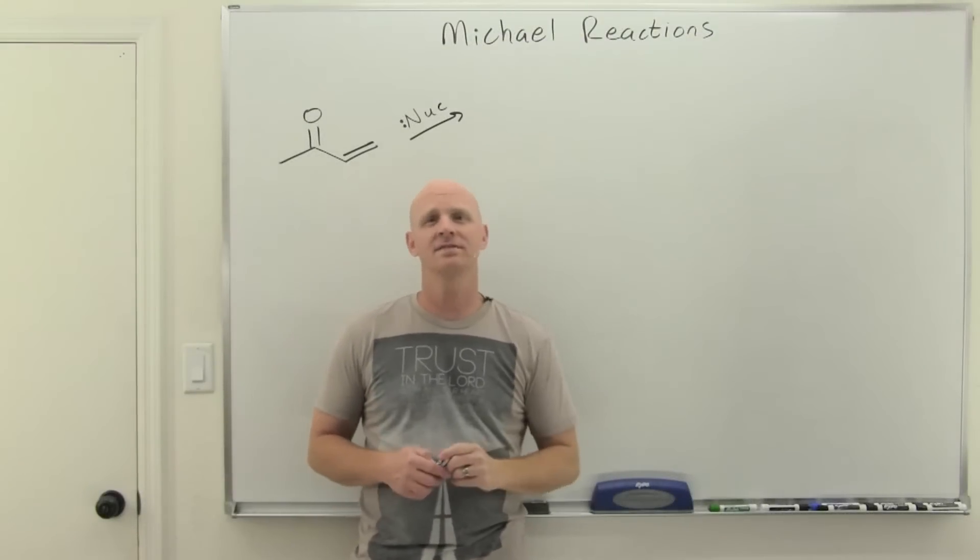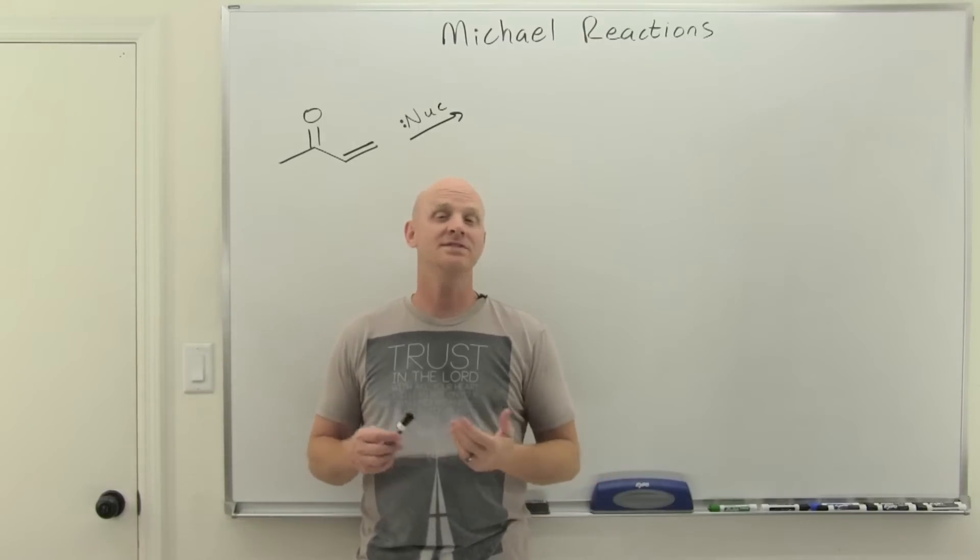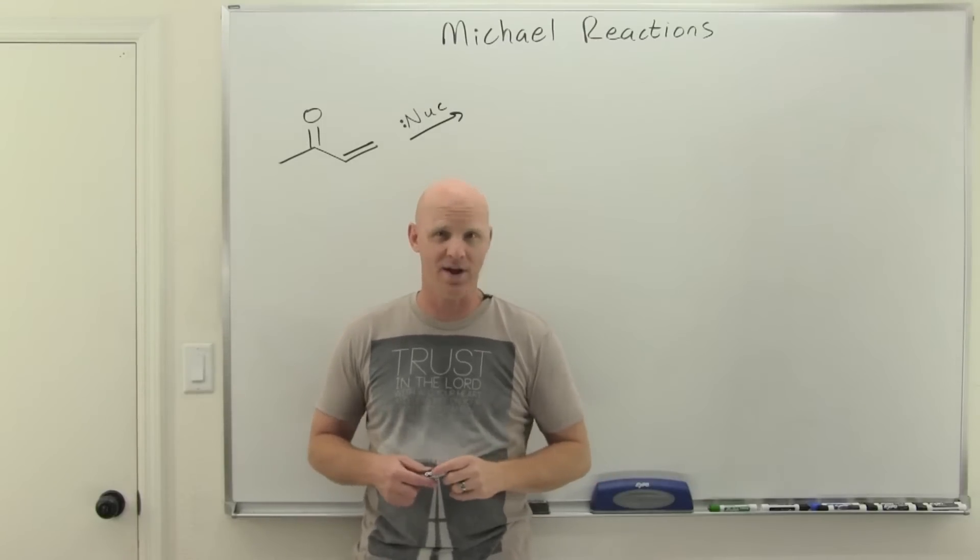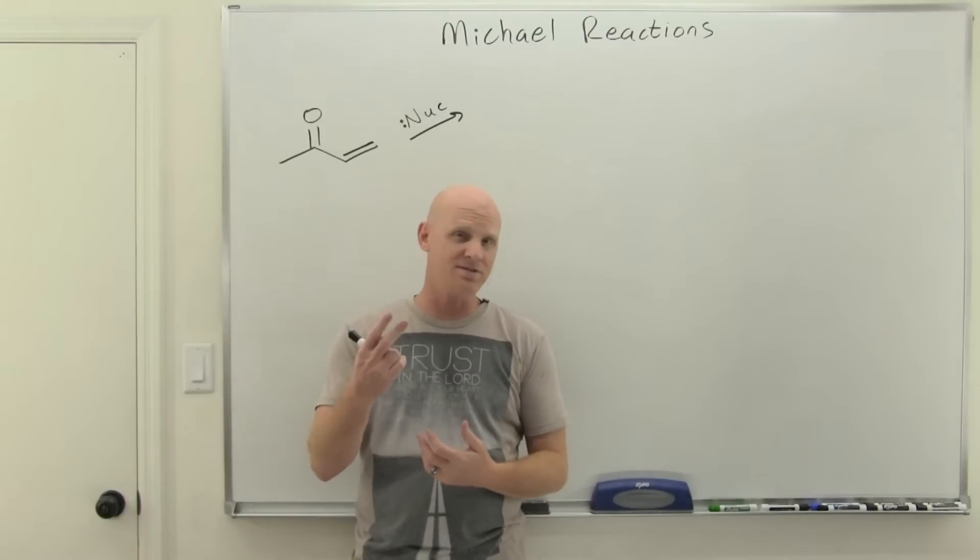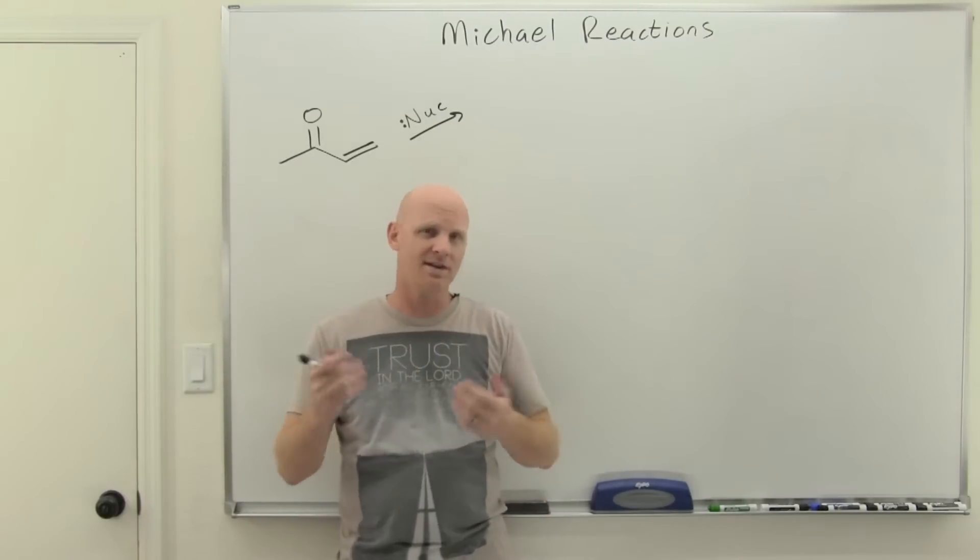Michael reaction is going to be the topic of this lesson, and this is the only lesson in this chapter that does not deal with an alpha substitution reaction. But the next lesson is on the Robinson annulation, and the first part is a Michael reaction, so we're going to talk about it here.